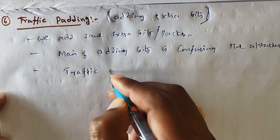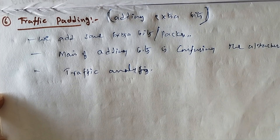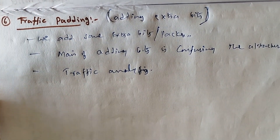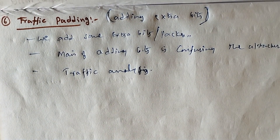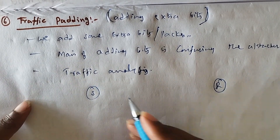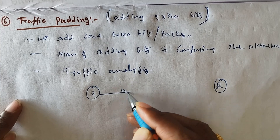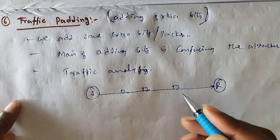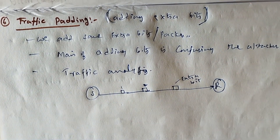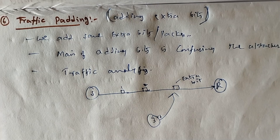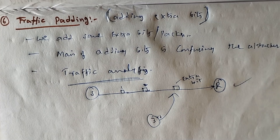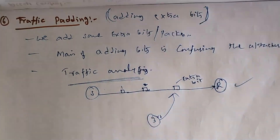Traffic padding is done in order to prevent the process of traffic analysis. For example, suppose I want to send two messages from sender to receiver — the first message and the second message. If I add an extra bit between them, the attacker or third party observing will think that there are three messages being sent from sender to receiver. So the traffic analysis attack will be prevented by using traffic padding. These are all the security mechanisms.